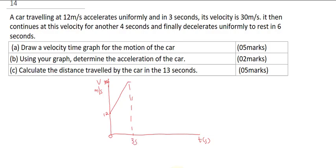It maintains uniform velocity for another 4 seconds. So if you add 3 plus 4, you will notice that here will be 7 seconds. Then it decelerates to rest, which is 0, at 6 seconds. When you add that, this gives you 13 seconds. So this is exactly what our graph is going to look like. Now let us do that on our graph.